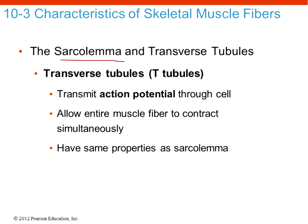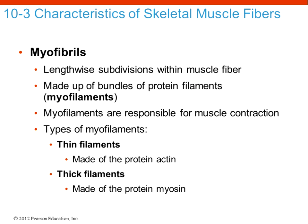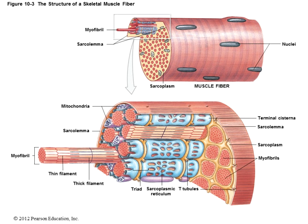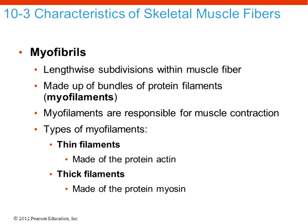Attached to the sarcolemma are transverse tubules, or T-tubules. These T-tubules are connected to the sarcolemma, and since the sarcolemma is the site of communication with the nervous system, an action potential begins at the sarcolemma and is then transmitted deep into the muscle cell through this T-tubule system. In an image of the muscle fiber, you can see the sarcolemma on the outside and all the yellow pathways representing the T-tubules.